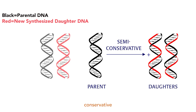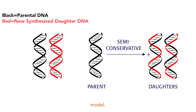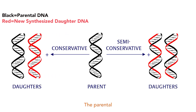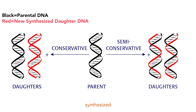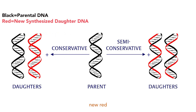In the conservative replication model, the parental DNA molecule is preserved and the daughter DNA contains two newly synthesized strands. The black parental DNA strands are used as templates for two new red DNA strands.